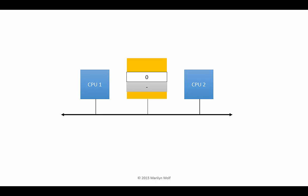But before CPU2 can do anything, CPU1 writes into the location. Then CPU2, not knowing that CPU1 has changed the flag, writes over that value and puts its own value into the shared memory. So CPU1 thinks it has written a value into memory, but that value is no longer there because CPU2 overrode it.